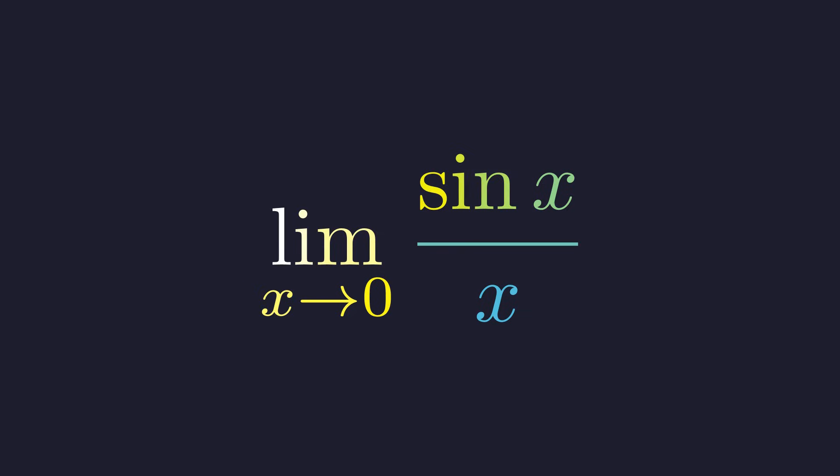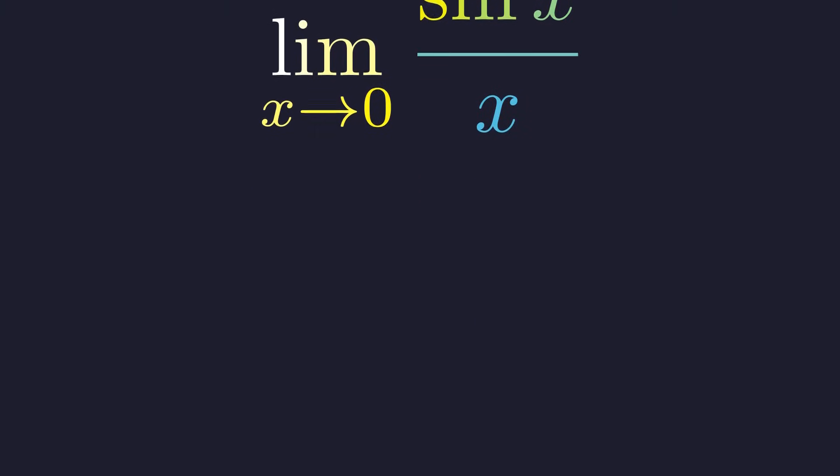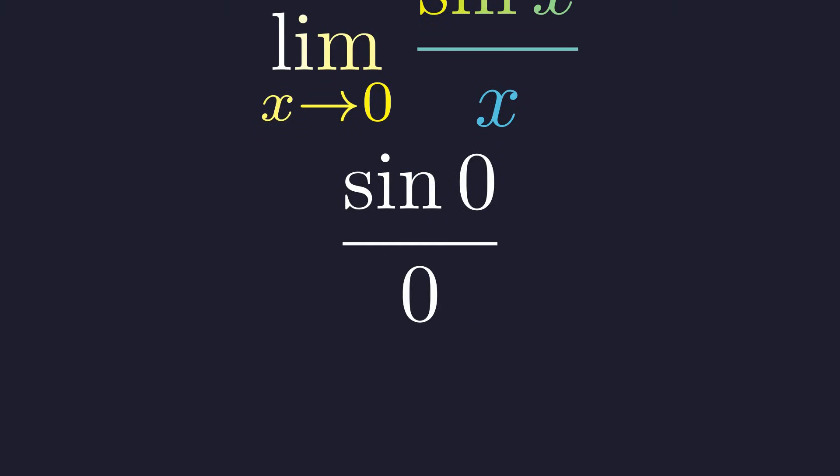Let's evaluate the limit of sine of x over x as x approaches zero. Our first instinct might be to just plug in zero for x. If we do that, we get sine of zero in the numerator and zero in the denominator. Since we know that sine of zero is zero, we arrive at the indeterminate form zero over zero. This tells us nothing about the limit's true value — it's a sign that we need a more sophisticated approach.